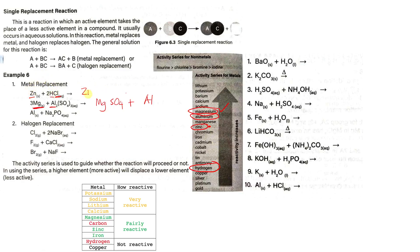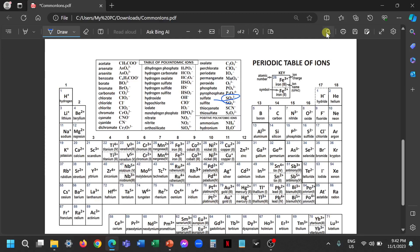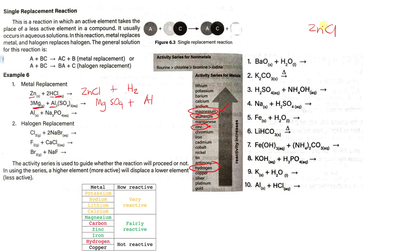So we have zinc chloride plus hydrogen. There is no such thing as H alone because H is a diatomic element, so we have H2. Let's check the charges: zinc is positive 2, and Cl is negative 1. Since it's not neutral, we add a 2 to Cl. The final products are ZnCl2 plus H2.